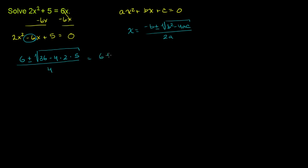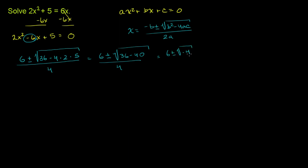This is going to be equal to 6 plus or minus the square root of 36 minus — 4 times 2 times 5 is 40 — so 36 minus 40, all over 4. That gives us 6 plus or minus the square root of negative 4, over 4.